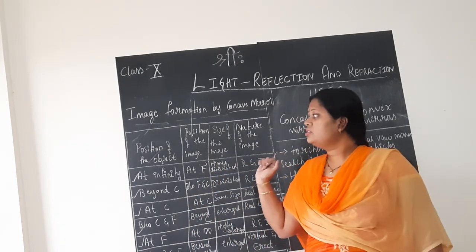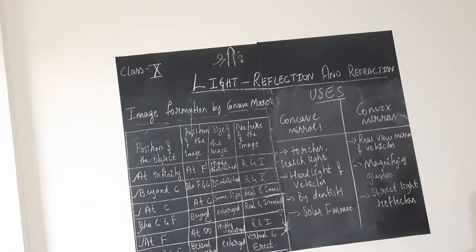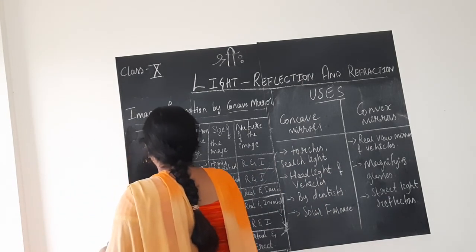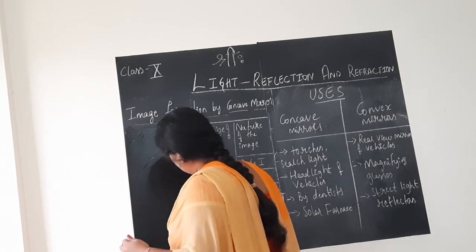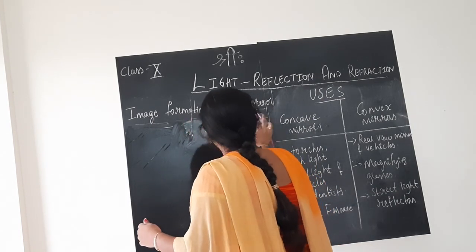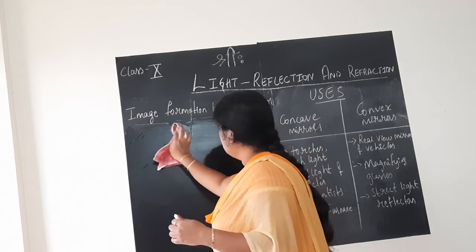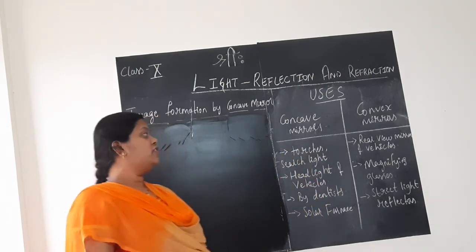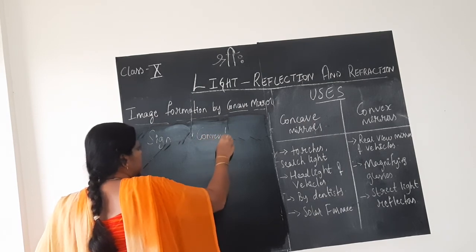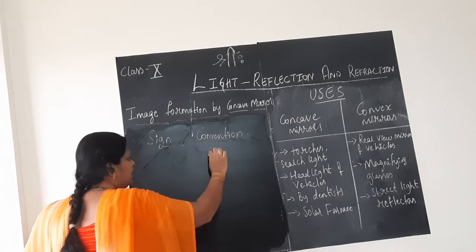After learning about these uses, you have one small topic — that is about the sign convention of the mirrors. What is this sign convention? We already know or have learnt this table. We know the basic ray diagram. Now, based on that ray diagram, there are certain rules to be followed when you solve the problems. After learning about the ray diagrams of the image formed by the concave mirror at different positions, now we should be able to solve the problems based on them. For that, we should know about this sign convention.